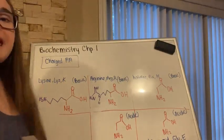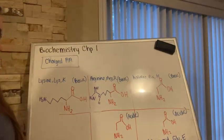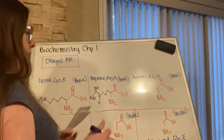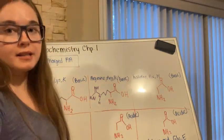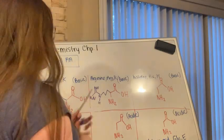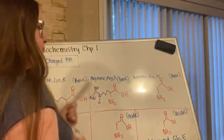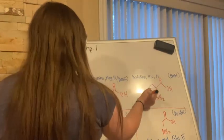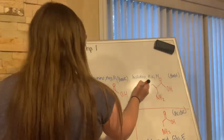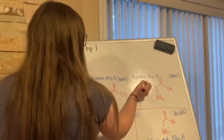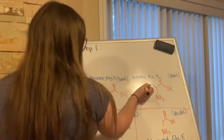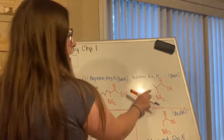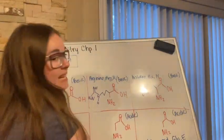Then we have histidine. Histidine has H-I-S as its three-letter abbreviation and H as its one-letter abbreviation. Its side chain kind of looks like a house — it has a nitrogen down here and a nitrogen up there with a double bond. That's how I remember histidine.